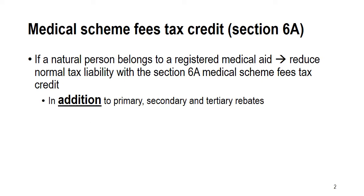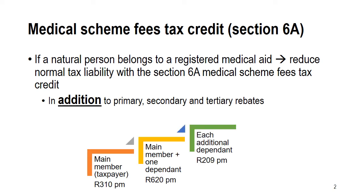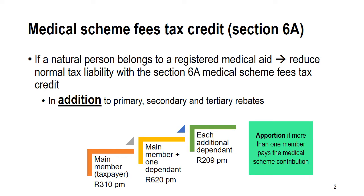If we have a natural person that belongs to a registered medical aid, in addition to the primary, secondary, and tertiary rebates which depend on their age, they will be able to qualify for the Section 6A Medical Scheme Fees Tax Credit. This is a fixed amount per month: R310 for the main member only, R620 when there is one dependent (spouse or child), and R209 per month for each additional dependent thereafter.